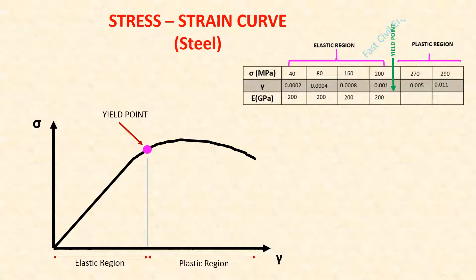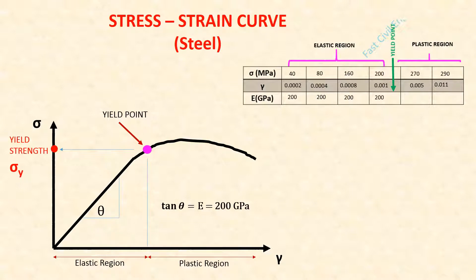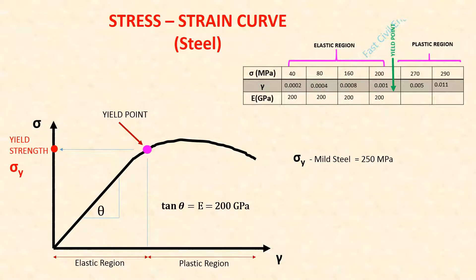The curve is divided into an elastic region and a plastic region. The yield strength is denoted as sigma Y. The slope of the straight portion gives Young's modulus, which is equal to 200 GPa. The yield strength of mild steel is equal to 250 MPa.